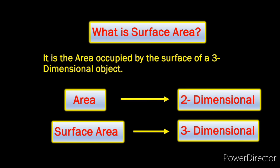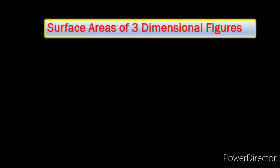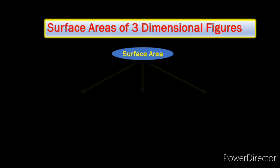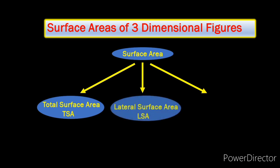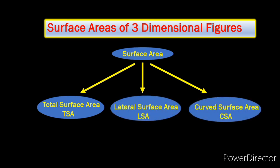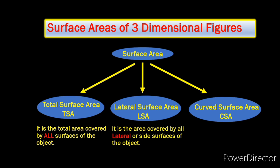Now what's very interesting is that the surface area of three-dimensional objects is divided not just into one or two but three different types of areas. They are the total surface area, the lateral surface area and the curved surface area. As the name suggests, total surface area includes the area covered by each and every surface of the object. Now lateral means side, so lateral surface area will include only the areas of the side surfaces of the object. And curved surface area, again as the name suggests, will include the area that is occupied by the curved surfaces of the object.